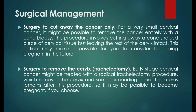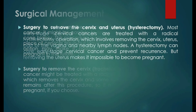The uterus remains after a trachelectomy, so it may be possible to become pregnant if you choose. The third option is surgery to remove the cervix and uterus, or hysterectomy. Most early-stage cervical cancers are treated with a radical hysterectomy, which involves removing the cervix, uterus, part of the vagina, and nearby lymph nodes. A hysterectomy can cure early-stage cervical cancer and prevent recurrence, but removing the uterus makes it impossible to become pregnant. Minimally invasive hysterectomy, which involves several small incisions rather than one large incision, may be an option. Patients tend to recover more quickly and spend less time in the hospital, though some research has found it may be less effective than traditional hysterectomy.